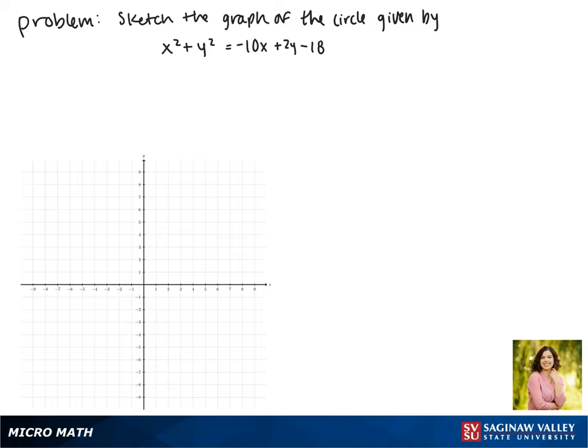Today we'll be sketching the graph of the circle given by x squared plus y squared equals negative 10x plus 2y minus 18.